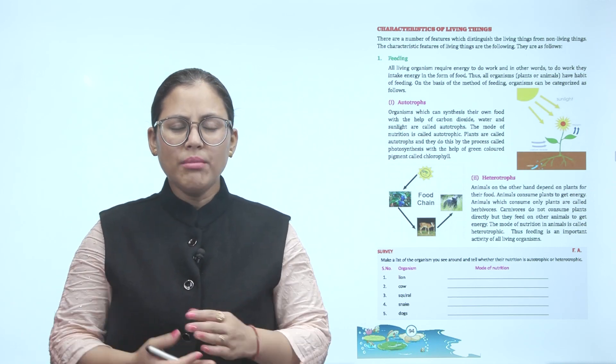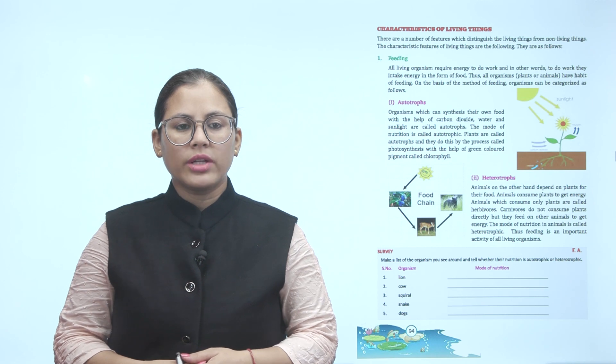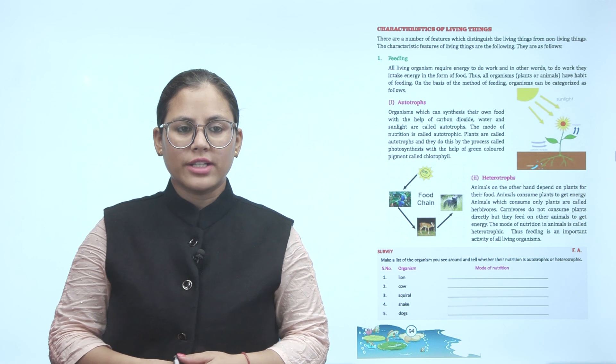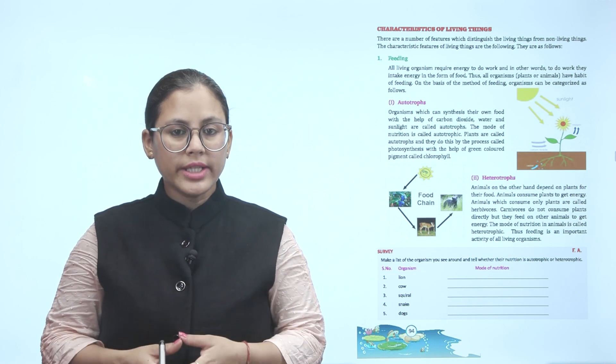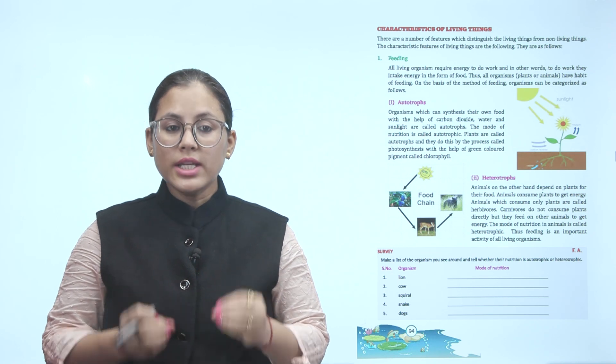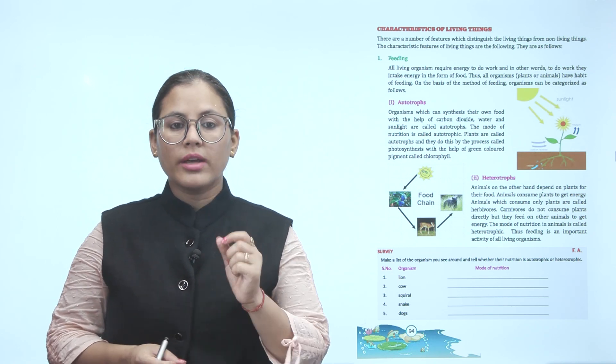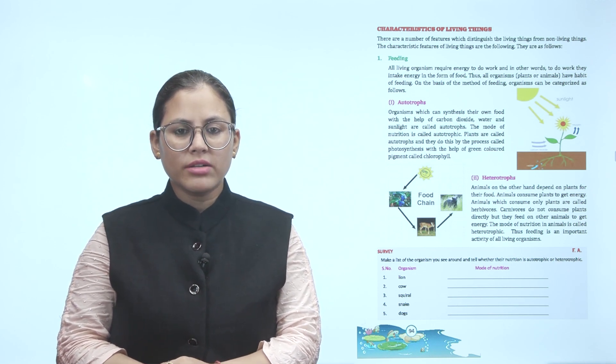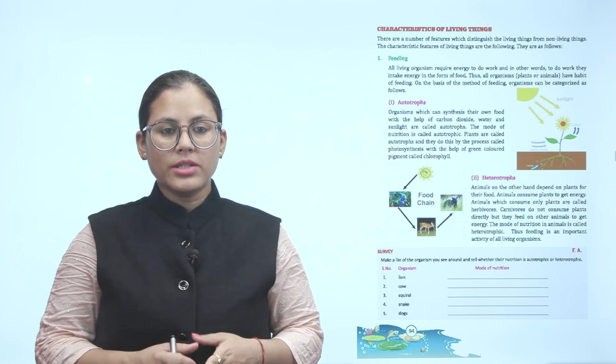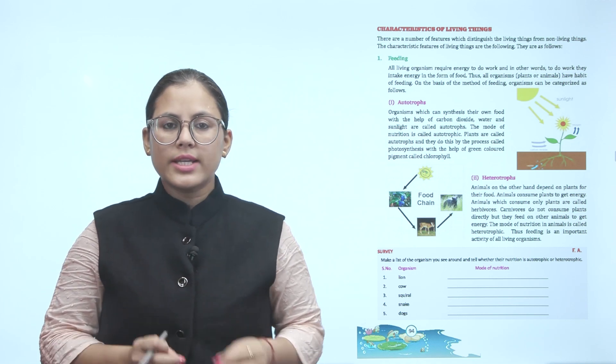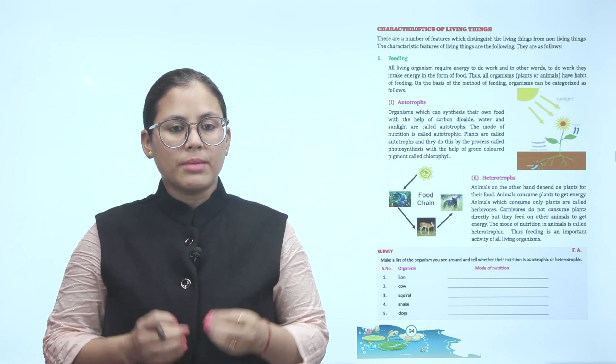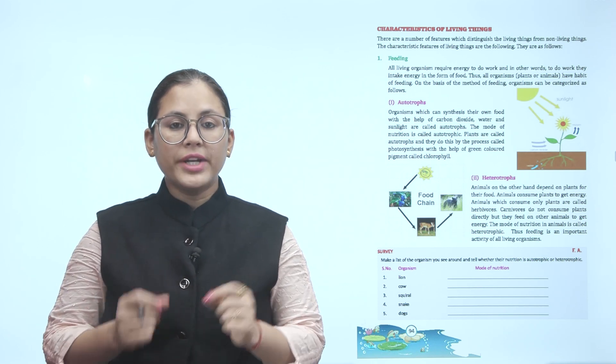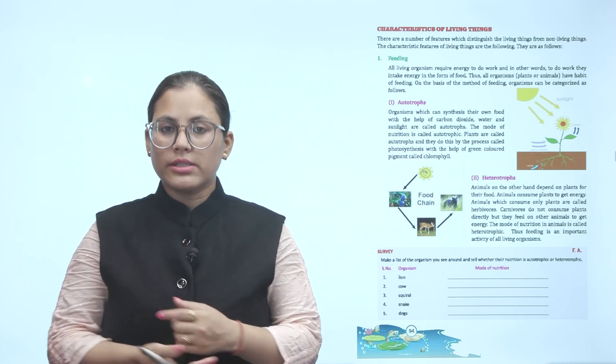Characteristics of living things. There are a number of features which distinguish the living things from non-living things. The characteristic features of living things are the following. Number one: feeding. All living organisms require energy to do work. In other words, to do work they intake energy in the form of food. Thus all organisms, plants and animals, have habit of feeding. On the basis of the method of feeding, organisms can be categorized as follows.